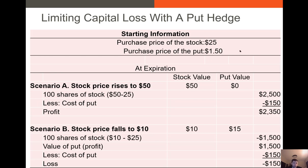Let's take a look at a protective put example. We've purchased a put where the current share price at the time was $25, the purchase price of the put was $1.50, and the put has a strike price of $25. In scenario A, the stock price rises to $50 from $25. If we had 100 shares, the portfolio gain is $25 times 100, so $2,500, minus the cost of the put — $1.50 times 100, so $150. Our profit is $2,350 if the price rises to $50 from $25.